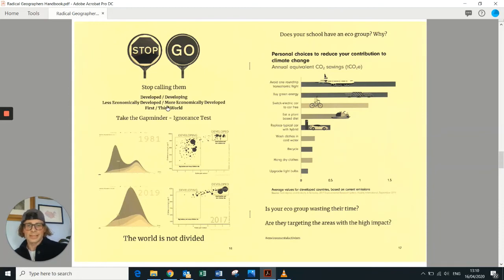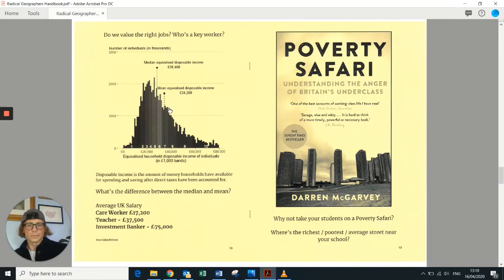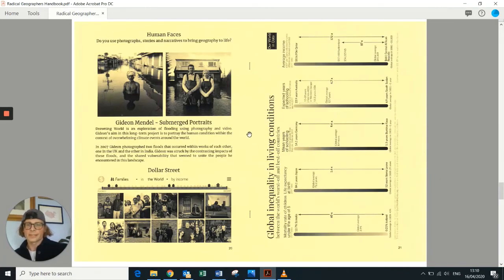Language that we use, using outdated language. Do students have an up-to-date world view? Provocative activities like saying, let's go for a poverty safari. Where would we need to go to find the richest or the poorest or the average street in our local area? And using that then as a platform for discussion. Putting the face to a lot of these issues, using imagery and people rather than just numbers and data.